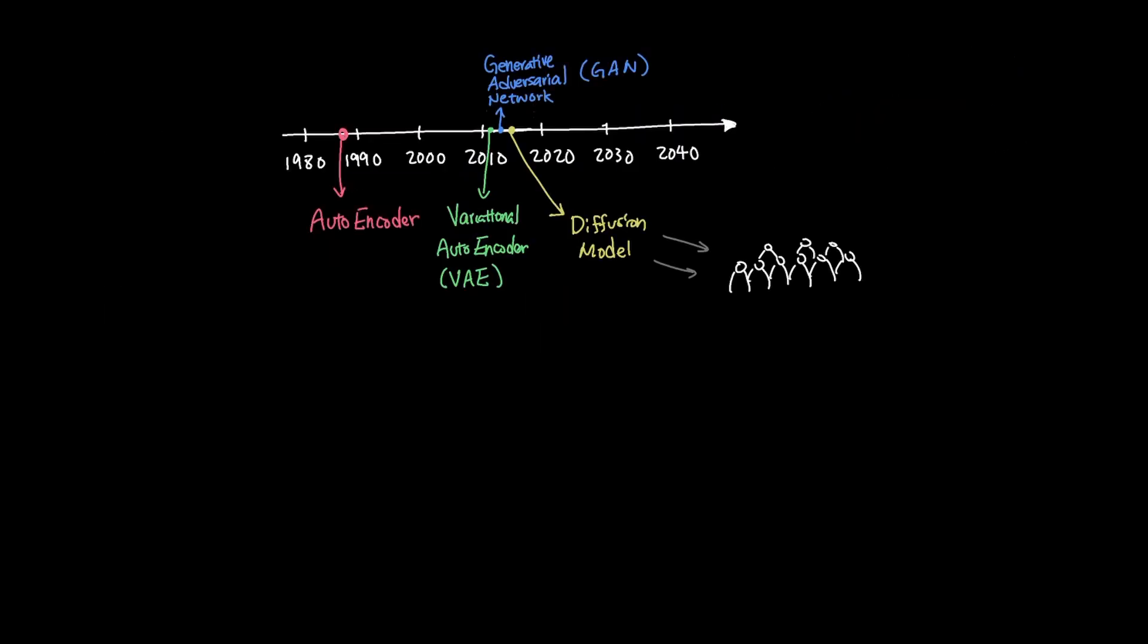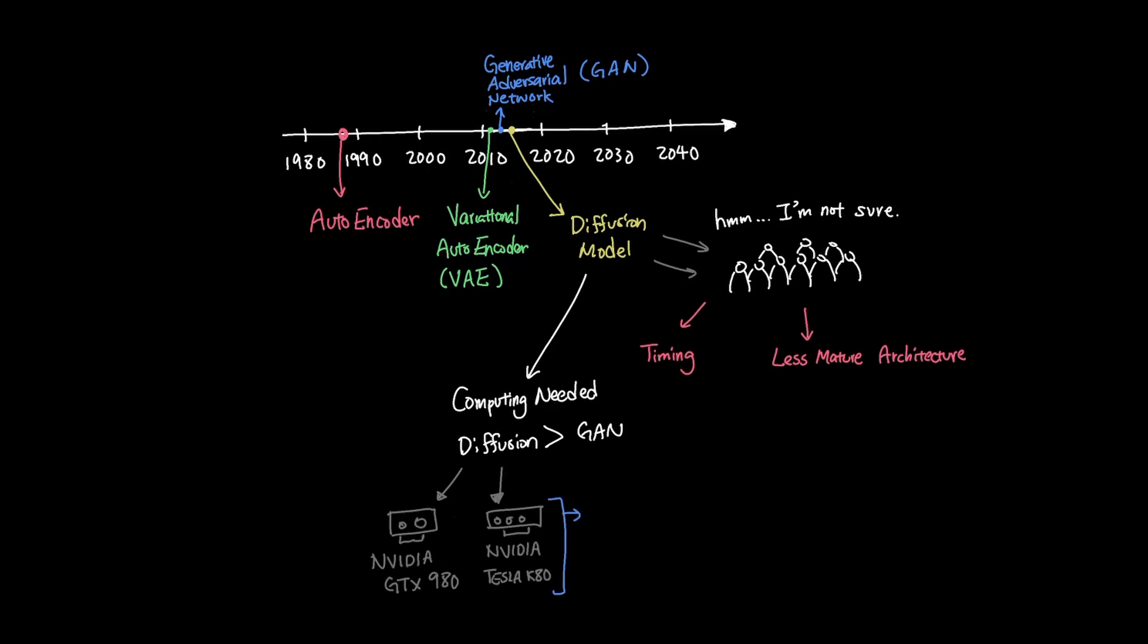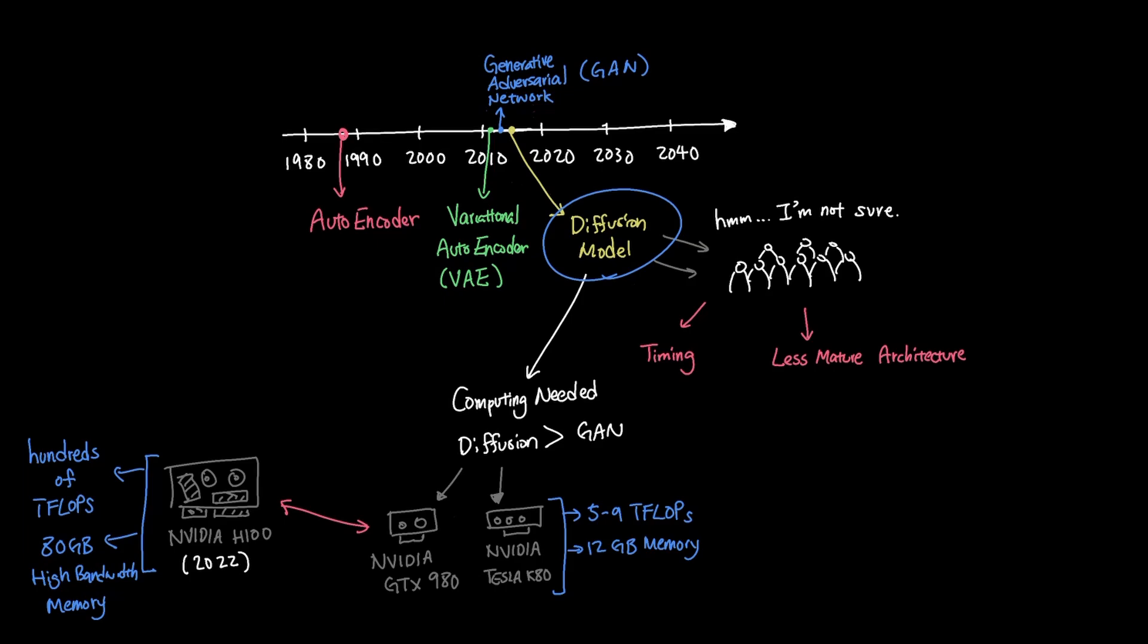While conceptually, this seems very interesting, it failed to gain mainstream adoption when it just came out in 2015, mainly because of timing and less mature architecture. The original concept proposed by diffusion model required a lot of computing compared to generative adversarial network. Back then common GPUs were Nvidia's GTX 980 and Tesla K80, which only delivered around 5 to 9 teraflops with less than 12 gigabytes of memory. By today's standard of Nvidia's H100, which was released in 2022, it delivers hundreds of teraflops with over 80 gigabytes of high bandwidth memory. So the diffusion model somewhat sat on the shelf to be explored more until both hardware caught up to where it needed to be.